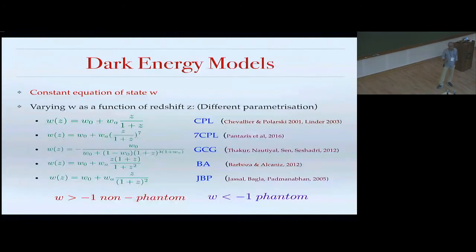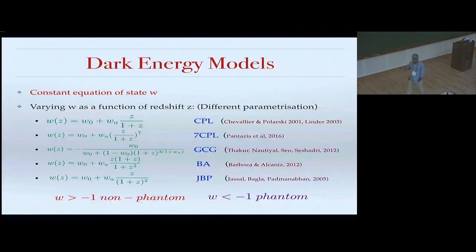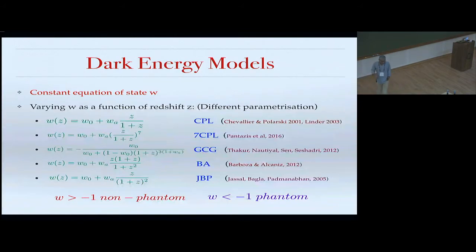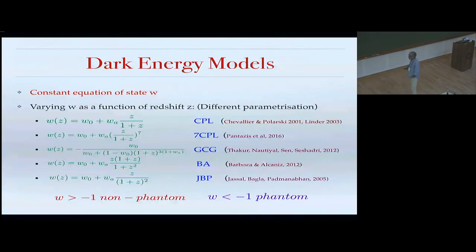There are hundreds of dark energy models. The ones I'll focus on include: a constant equation of state W (not minus one), a varying W as a function of Z using scalar field models or modified gravity, and different parametrizations that fit a variety of scalar field or modified gravity models. I consider around five different parametrizations, each with two parameters W0 and WA, giving different scalar field behaviors at different levels.